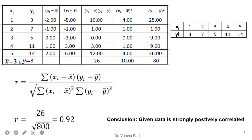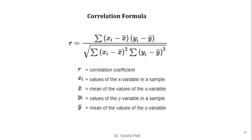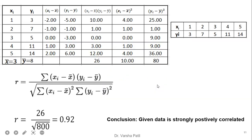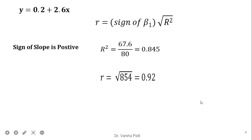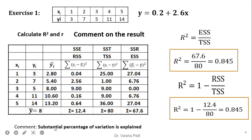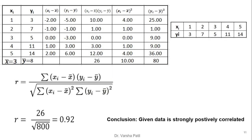The input data has five records. We calculate x-bar and y-bar, then compute x minus x-bar, y minus y-bar, their multiplication, their summation, and the denominator terms. Putting all values together, we get R = 0.92, and using the coefficient of determination approach we also get 0.92. The R-squared of 0.84 is a very good value, meaning a substantial percentage of variation in the dependent variable is explained by the independent variable. With R = 0.92, the data is highly positively correlated.